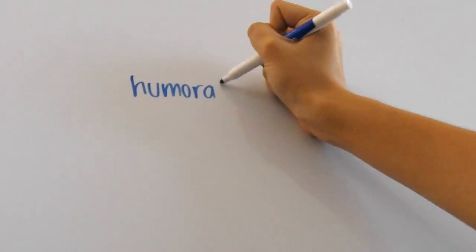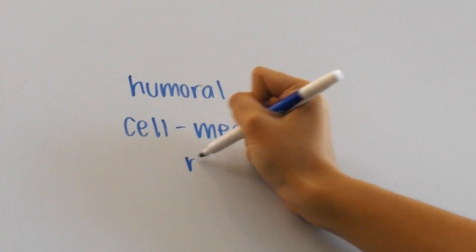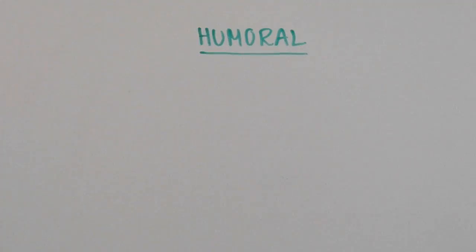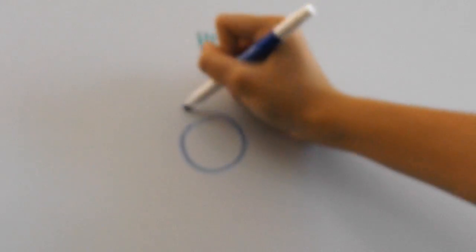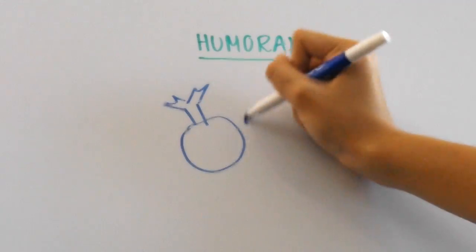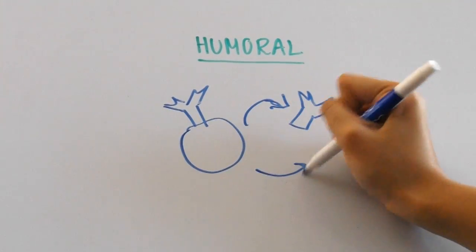There is also the humoral immune response and the cell-mediated response, which involve the roles of B and T cells. In the humoral response, effector B cells secrete antibodies that circulate in the blood and lymph to recognize foreign substances and prevent them from contacting healthy body cells.